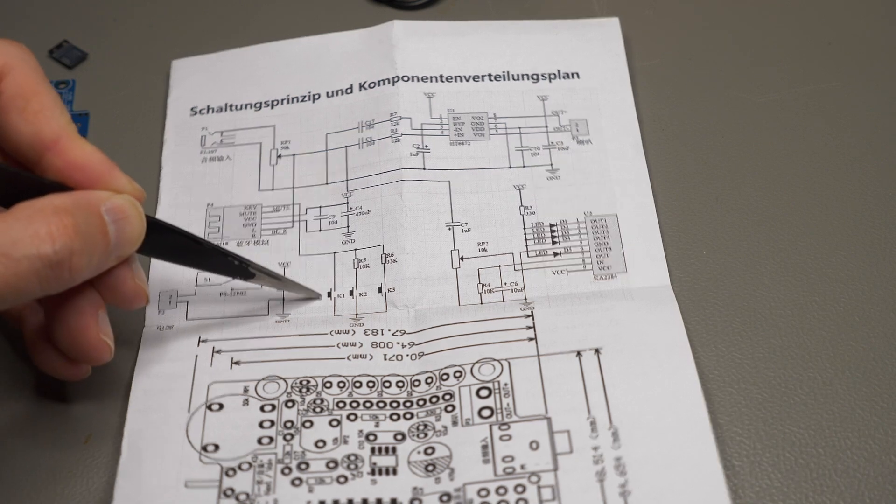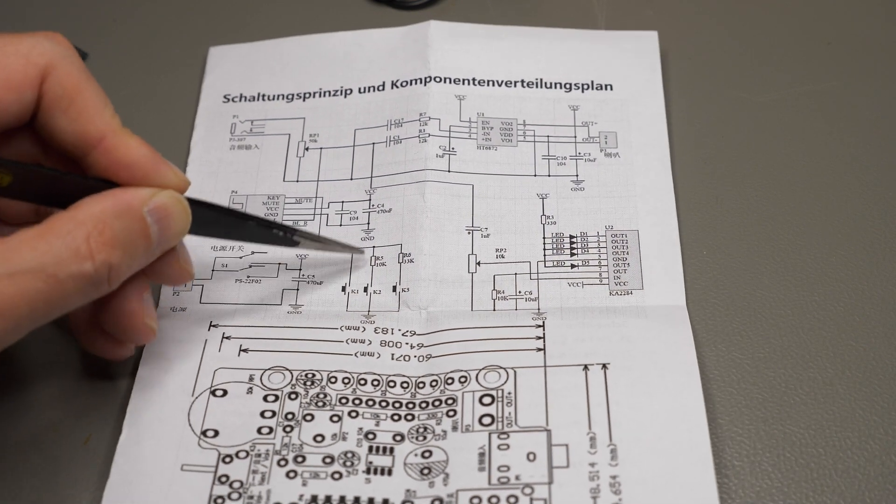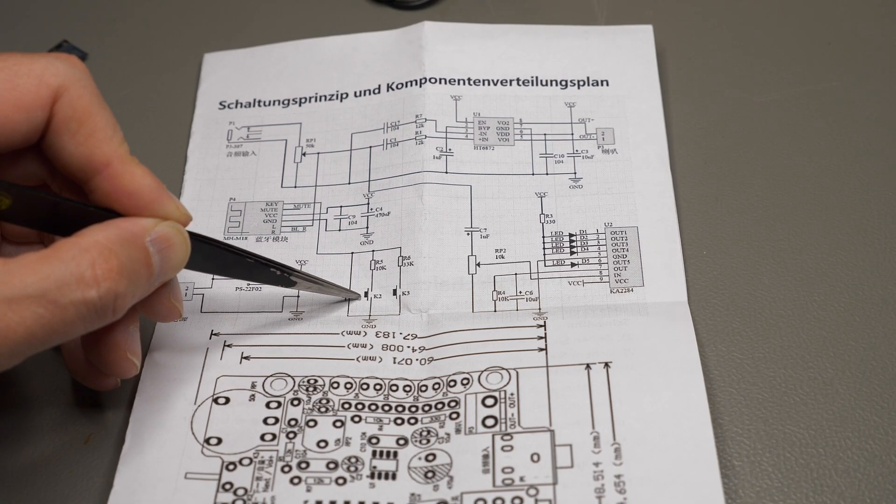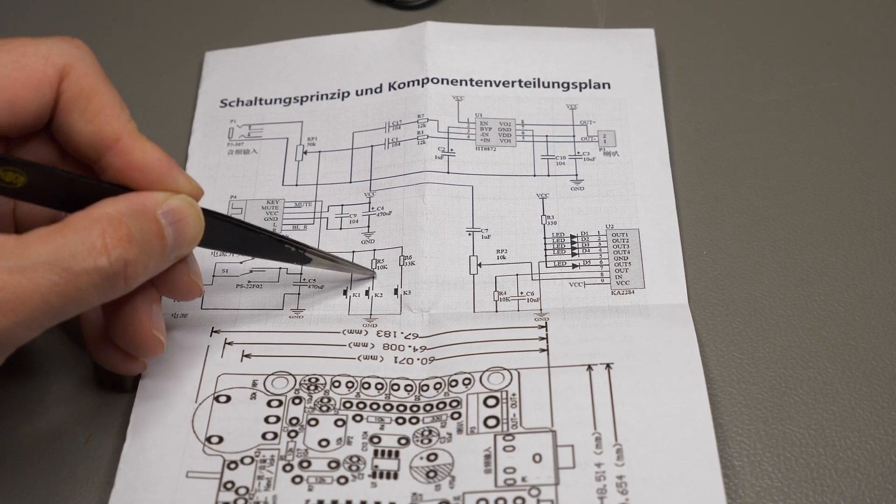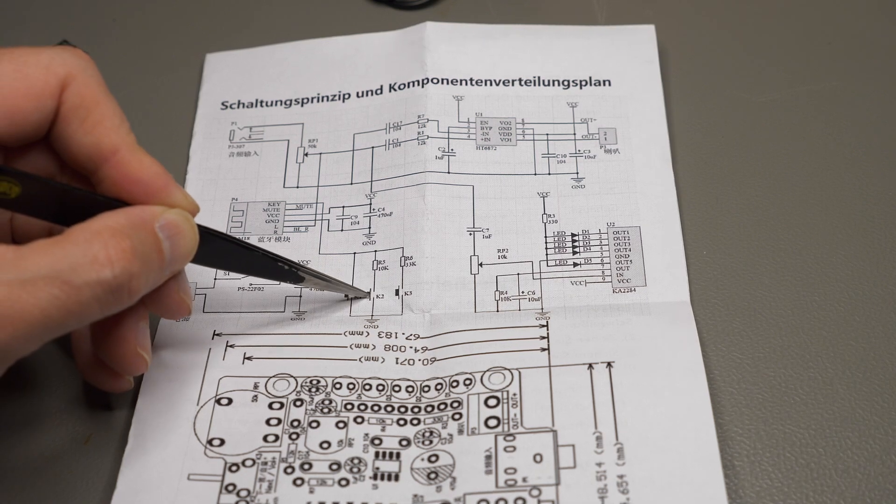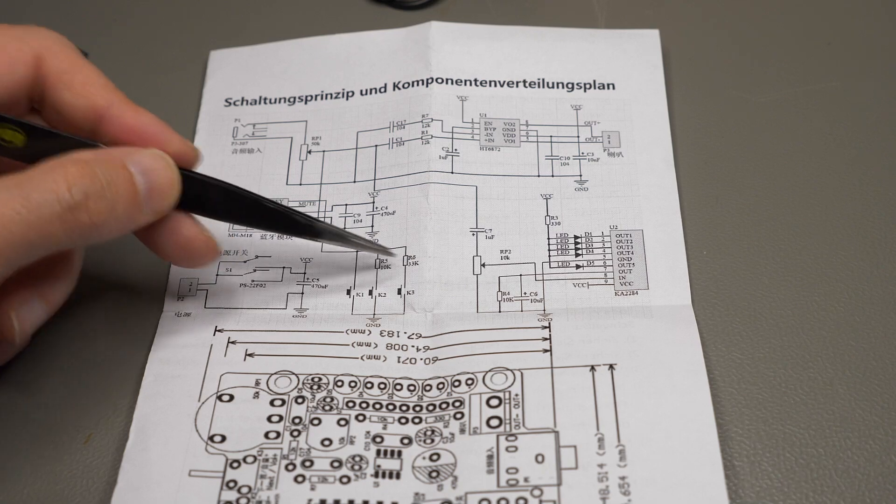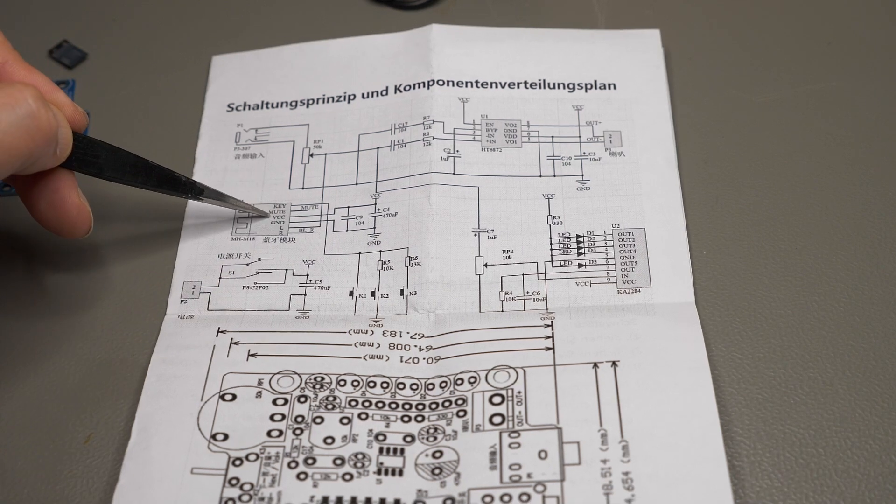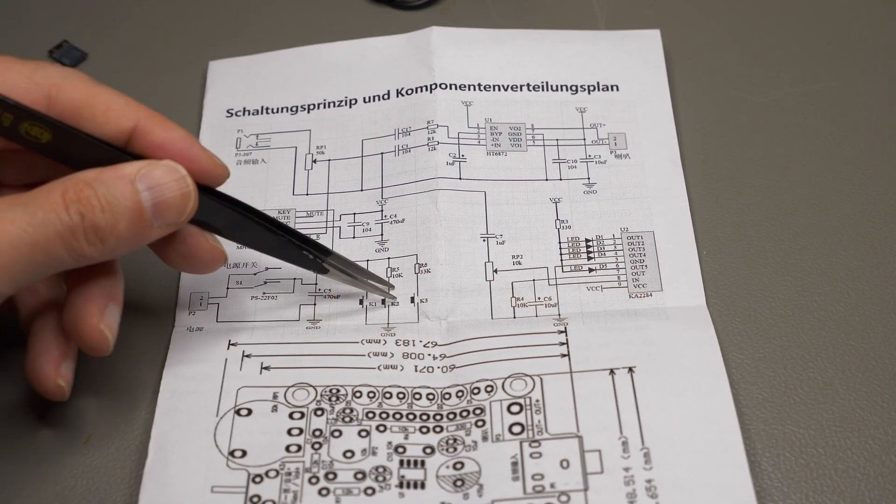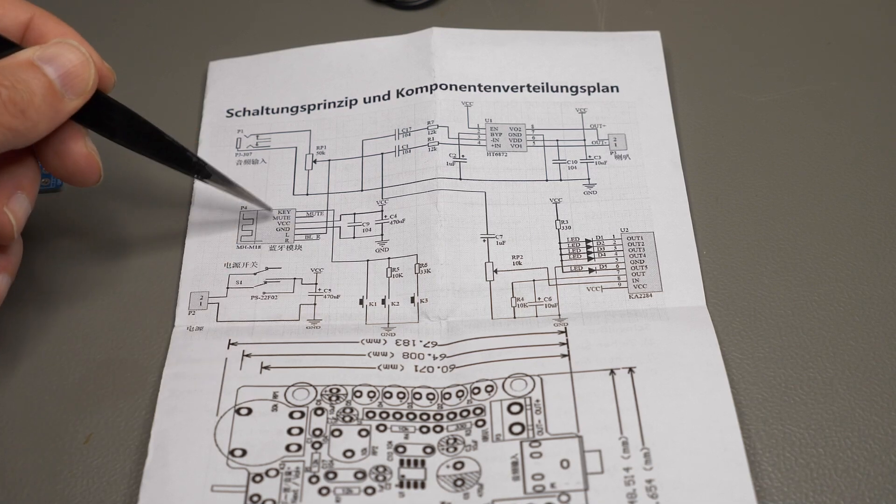So pull it directly to ground, it's button one. Pull it with a 10k resistor to ground, it's button two. And with a 33k to ground, it's button three. And I guess this is used for pairing the Bluetooth device and maybe skipping audio tracks forwards or backwards.